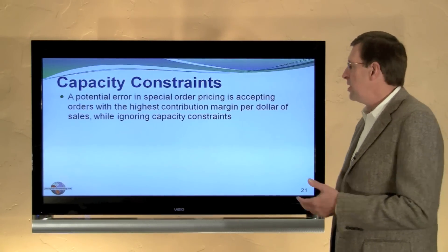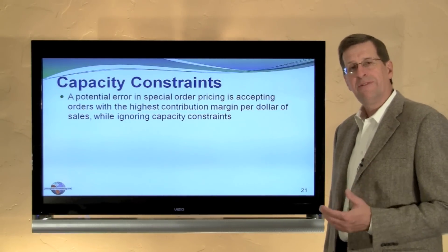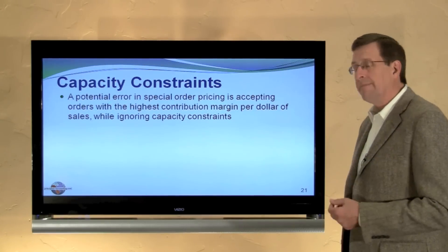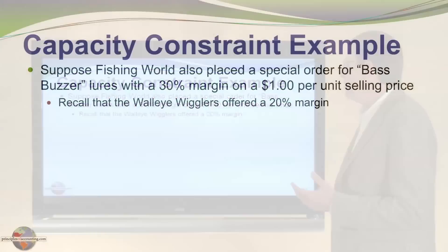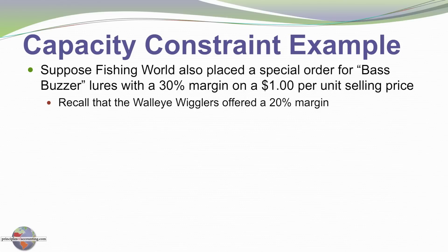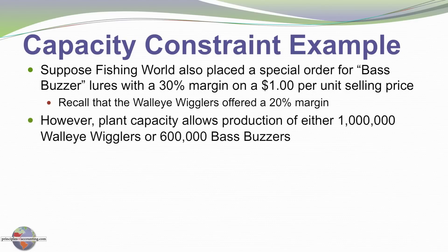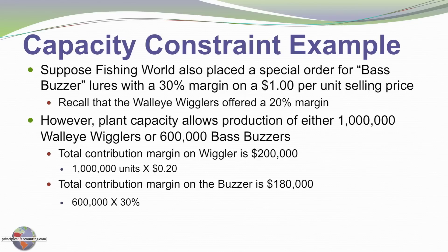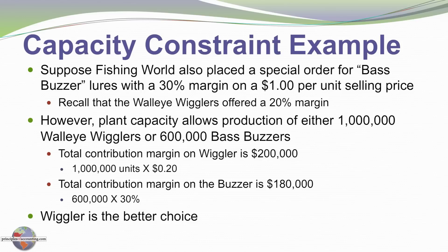We do need to be careful with special orders because of capacity constraint issues. We want to make sure we have capacity to produce these lures without incurring additional fixed costs. For example, suppose Fishing World also placed a special order for a bass fishing lure with a 30 percent margin on a $1.00 selling price. Would you want to accept the 30 percent margin or 20 percent margin? With capacity constraints, we may only have room to make 600,000 bass lures versus 1 million walleye lures. In that case, 1 million units at a 20-cent contribution enhances profitability by $200,000, whereas the higher-margin item only produces a $180,000 overall increase. So we'd want to select the walleye lure because overall profitability is higher, even though it involves a lower per-unit margin.